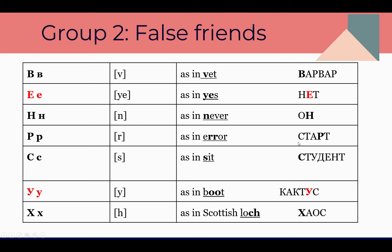So here you can read: С, Т, А, Р, Т — Старт. Can you guess what it means? The English word is the same in Russian: Старт — Start. Strong Russian Р!